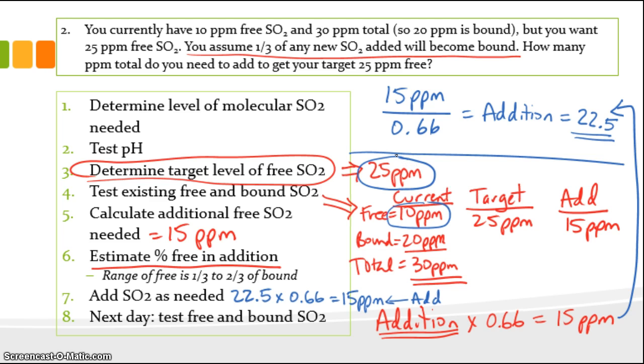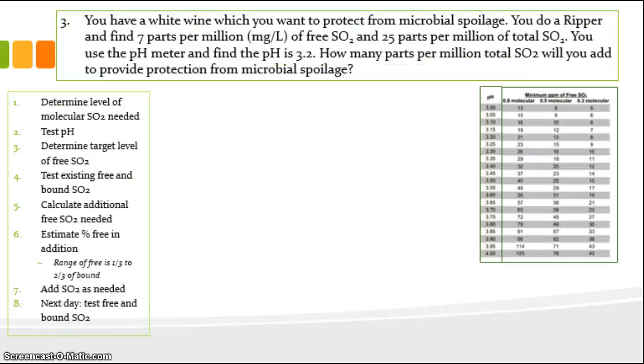Hopefully, I didn't confuse you by running all over the page here. But that's our estimate. And then, of course, the next day, we would do step eight, which is to test the free and bound SO2. And just to make sure that our assumption about the amount of free, that assumption of the two-thirds will be free, that our assumption's right. That's number two. Let's go to number three.